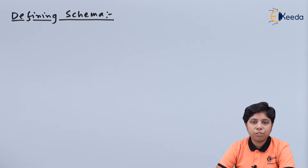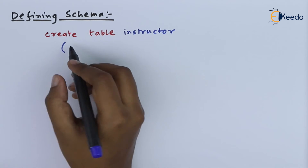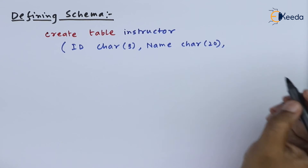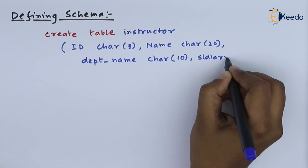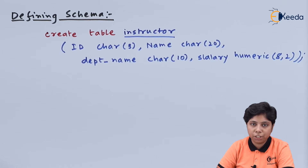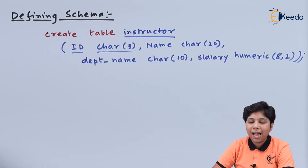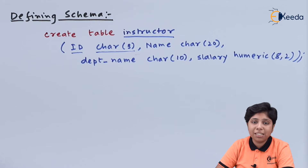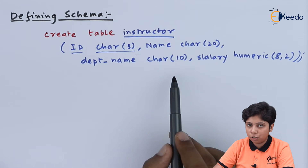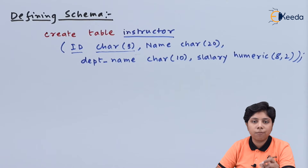To define a schema, we use the CREATE TABLE command in SQL. Here we can see that the CREATE TABLE command takes the table name or relation name, followed by opening braces, the attribute names and their data types separated by commas, and then closing braces with a semicolon to indicate the DDL statement has finished. This creates the table or schema for the instructor relation.